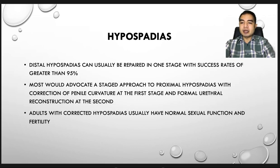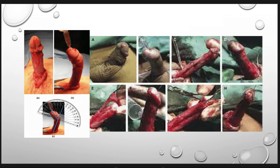Distal hypospadias can usually be repaired in one stage with success rates of greater than 95%. Most would advocate a staged approach to proximal hypospadias, with correction of penile curvature at the first stage and formal urethral reconstruction at the second. Adults with corrected hypospadias usually have normal sexual function and fertility. This is the corrected penis after surgery, and this is how chordee looks like — a curvature in the penis in the distal or proximal shaft.